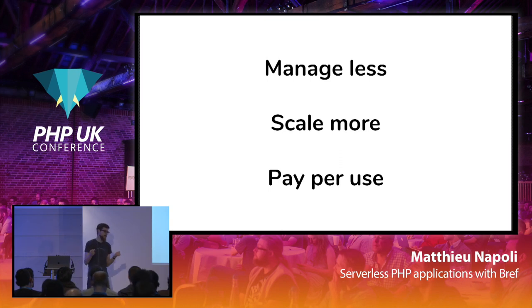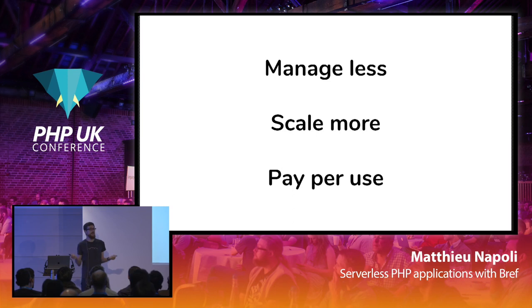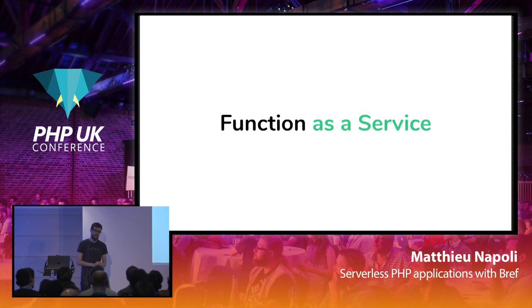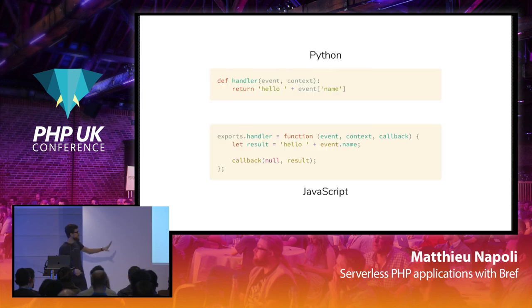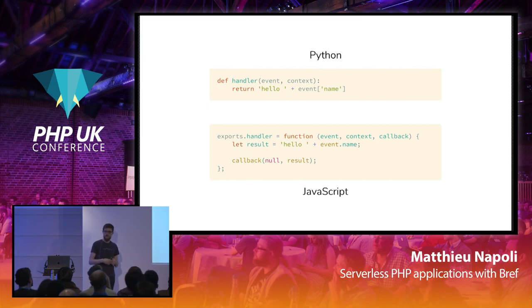But where is PHP in all of that? There is one service that is really interesting to us developers, and that is function as a service. This is a service where you send code and it runs. Here's an example of two functions in Python and JavaScript showing what you can do on AWS Lambda. These are functions that take an event object — the event is what triggered the function — and you can do whatever you want: query a database, process stuff, send emails, then return a result.